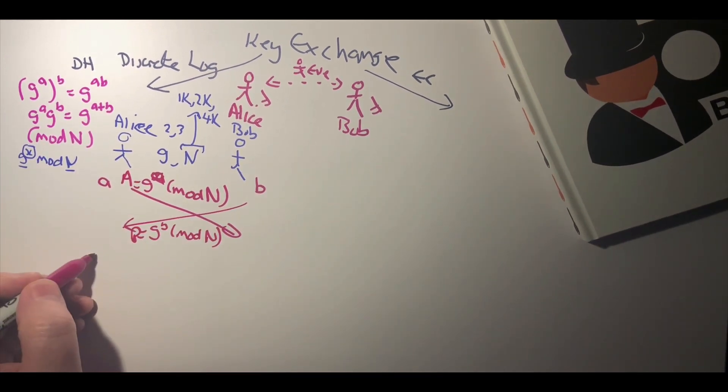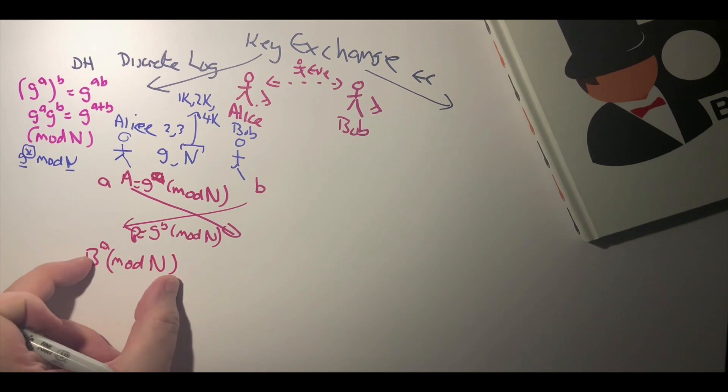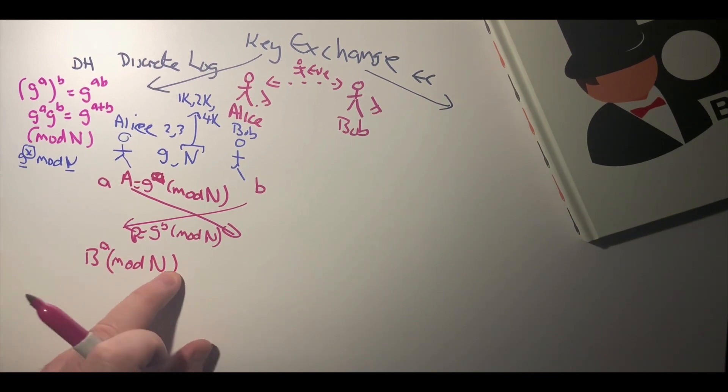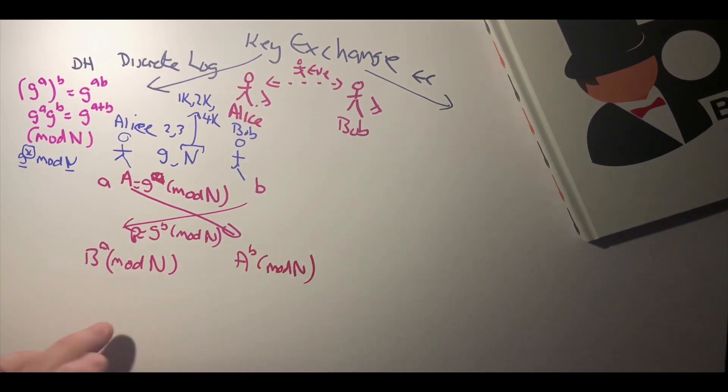They exchange these values. Then Alice takes her secret value and raises the value she's received to the power of a and takes mod n again to constrain the value between zero and n minus one. Bob will do the same, take Alice's value, raise it to the power of b, and take mod n.